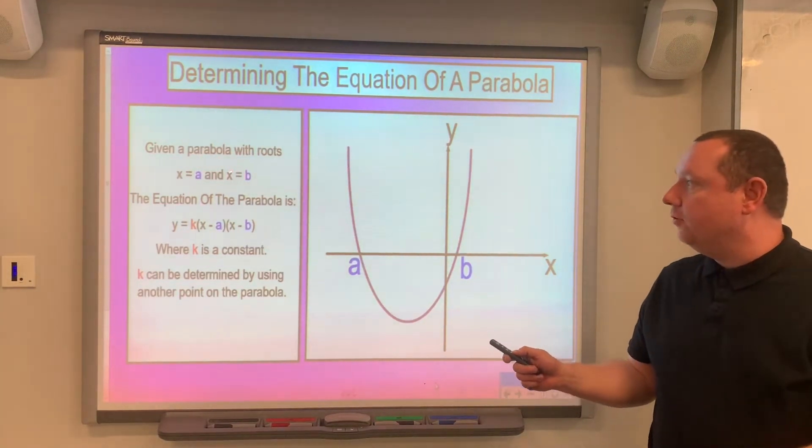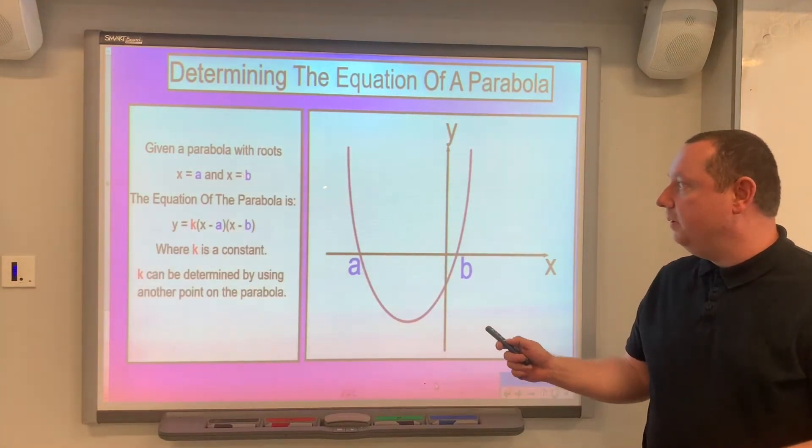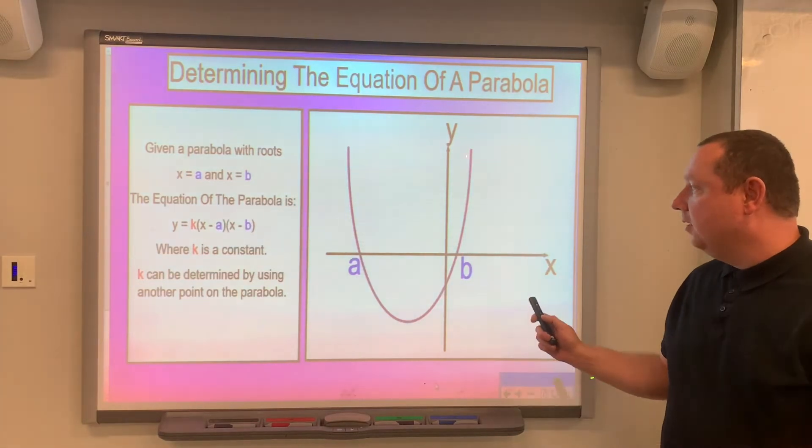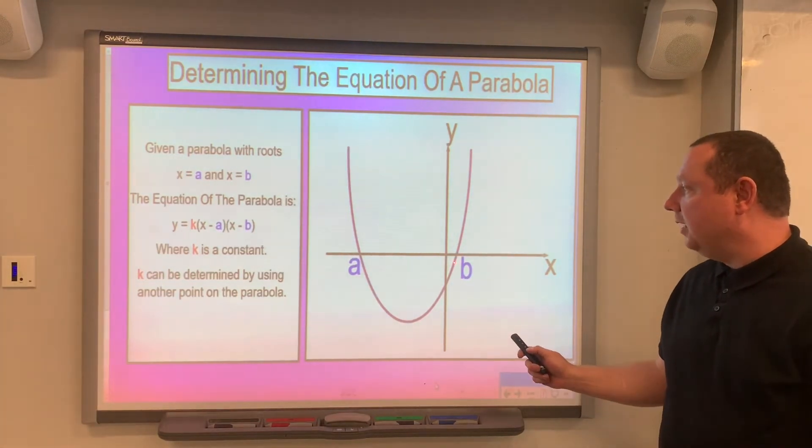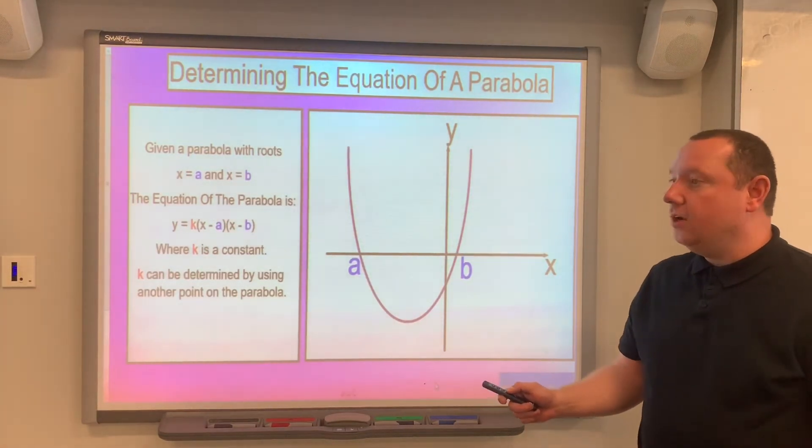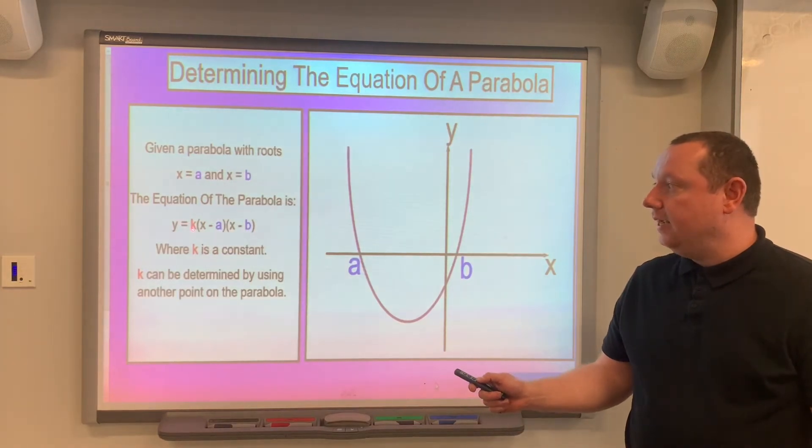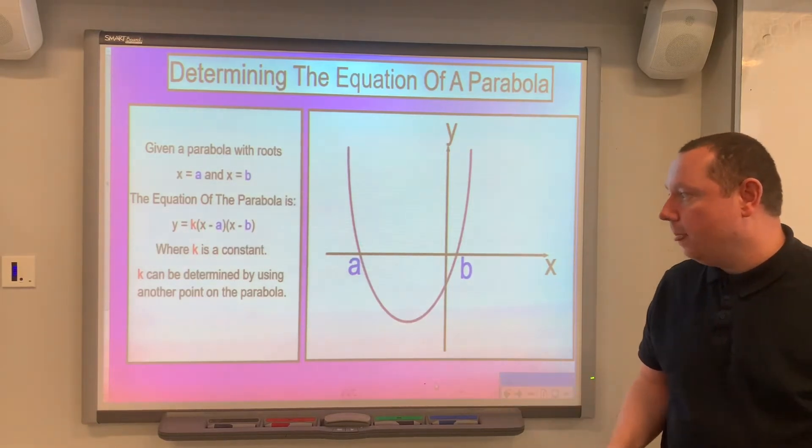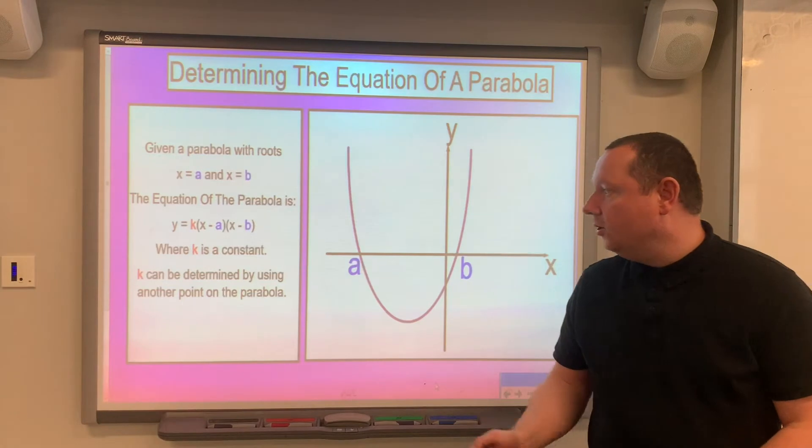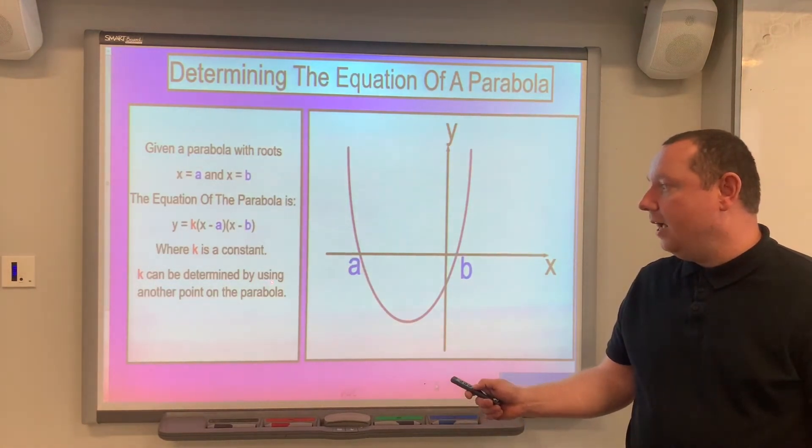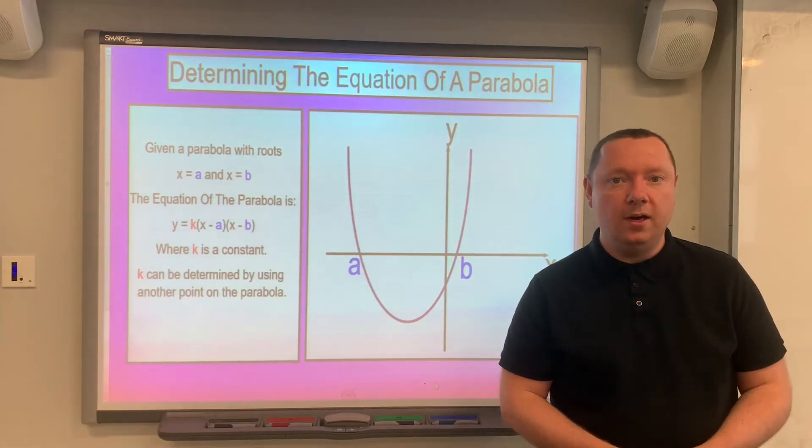If we've got a parabola with roots x equals a and x equals b as shown on the graph here, you can see a and b is where it cuts the x-axis. Then the equation is simply going to be k times (x minus a)(x minus b). This is its factored form where k is just some constant, and we're going to look at how do we find this k when we're given some other point on the parabola.